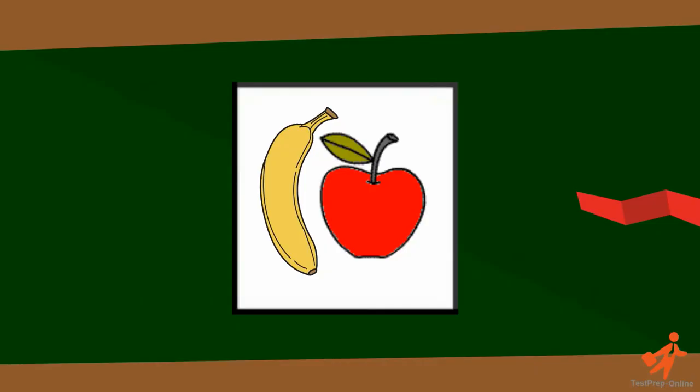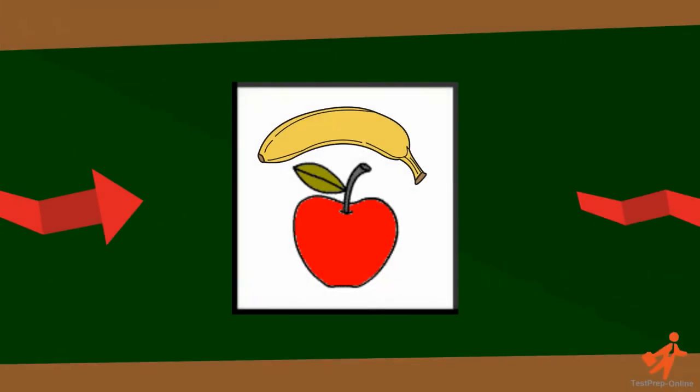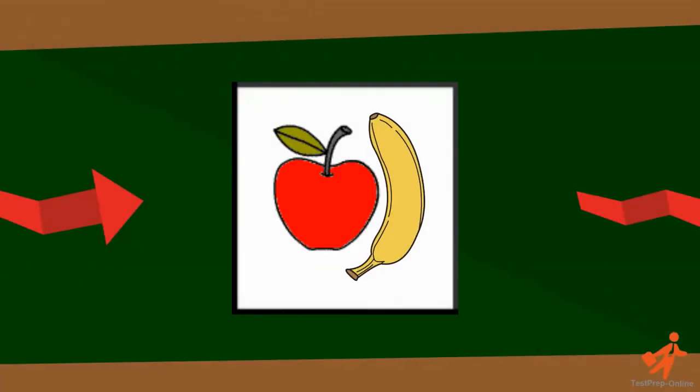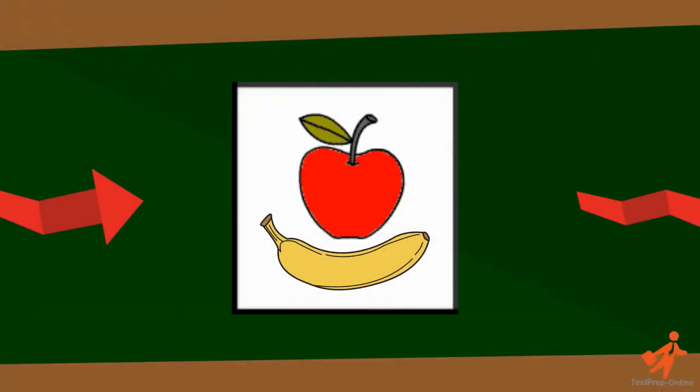First we have an apple with a banana to its left. In the second picture we have an apple with a banana above it. In the third picture we have an apple with a banana to its right. In the fourth frame we have an apple with a banana below it.